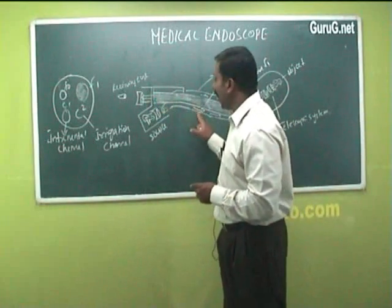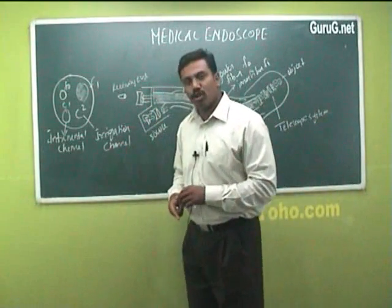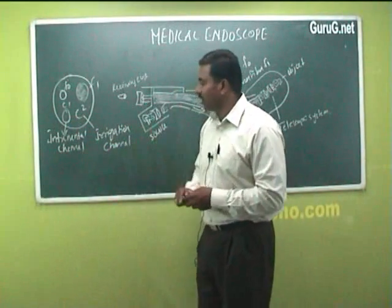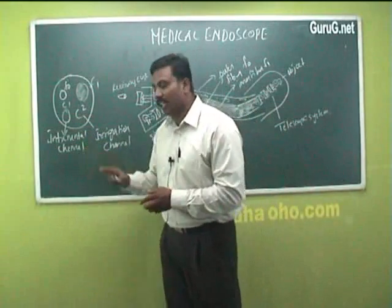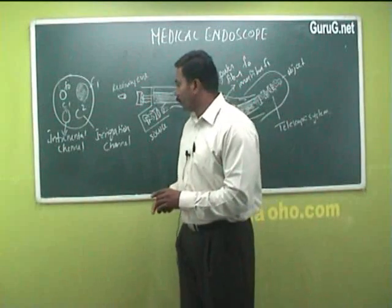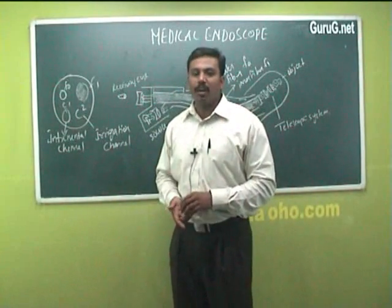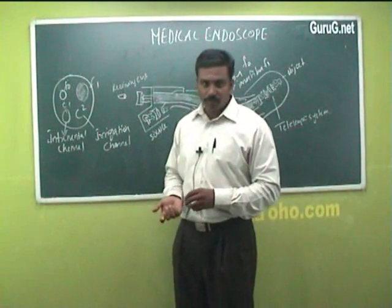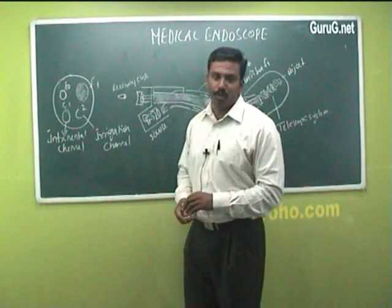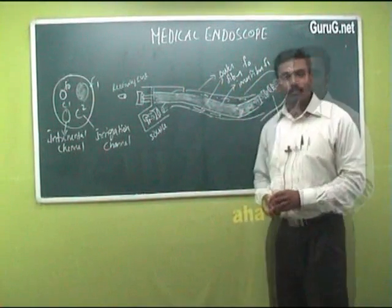This medical endoscope additionally consists of two more channels called the instrumental channel and the irrigational channel. The instrumental channel is used to send medical instruments for operation purposes, and the irrigation channel is used to blow air or to clean blood flow inside the organ so that we can have a better view. This is how a medical endoscope is used to view the internal organs of the human body.